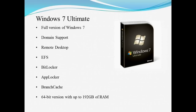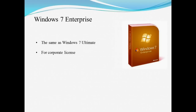The next version is Windows 7 Ultimate — this is the full version of Windows 7. You get domain support, Remote Desktop, EFS, and BitLocker. BitLocker gives you the opportunity to encrypt the whole hard drive. With EFS you can encrypt single files, but with BitLocker you are able to encrypt the whole hard drive. This also comes in a 64-bit version with the capability of taking up to 192GB of RAM.